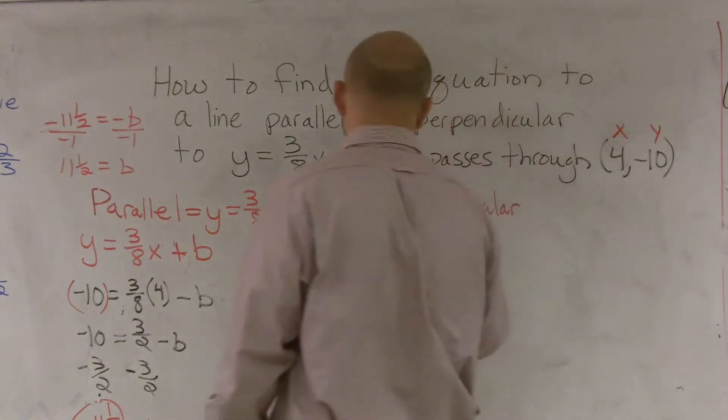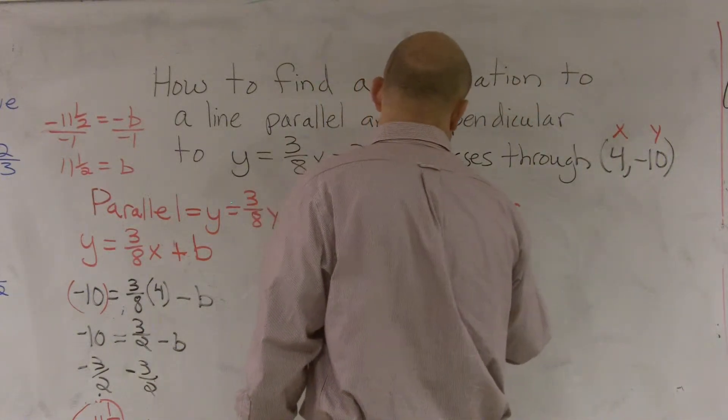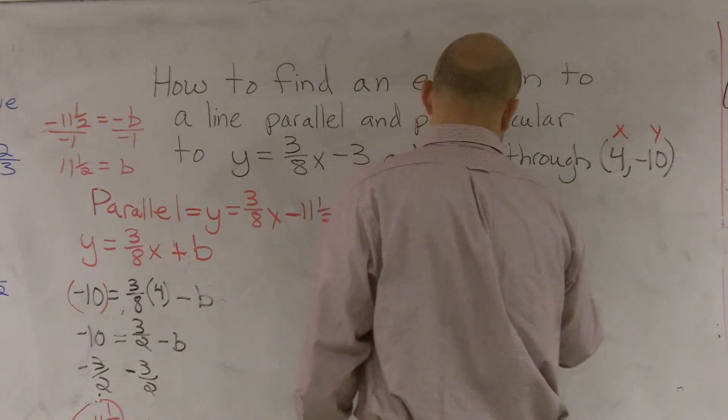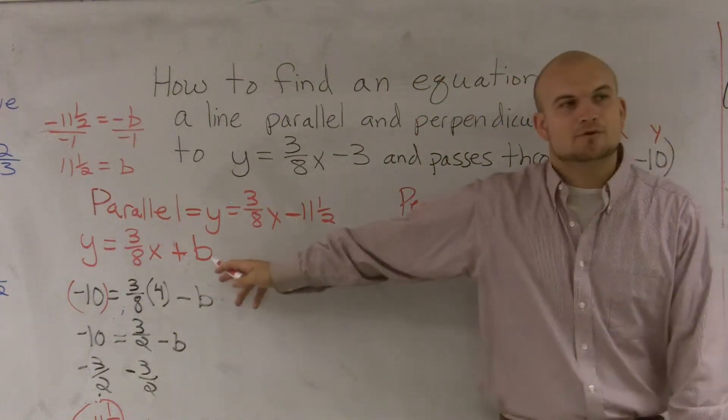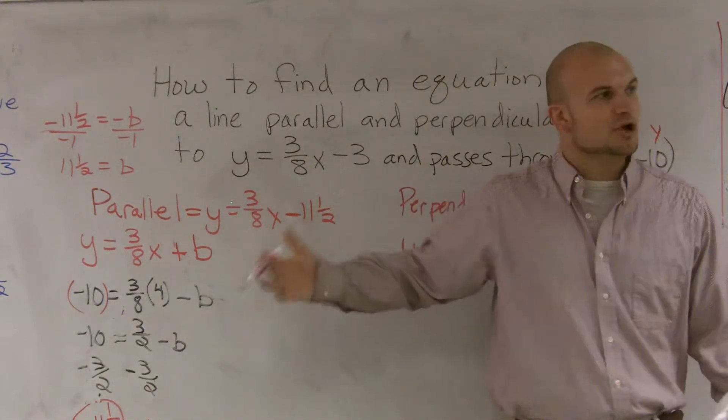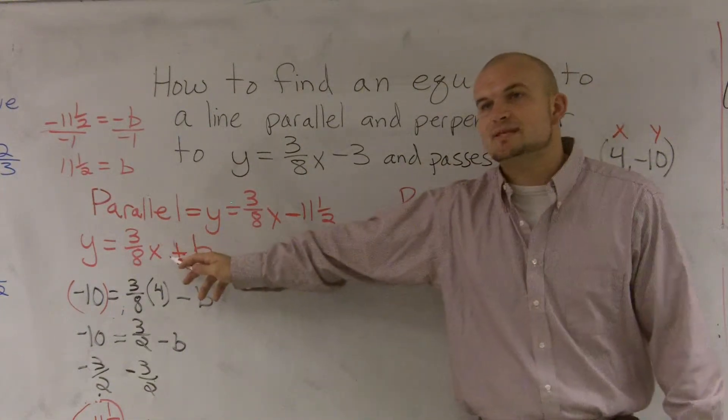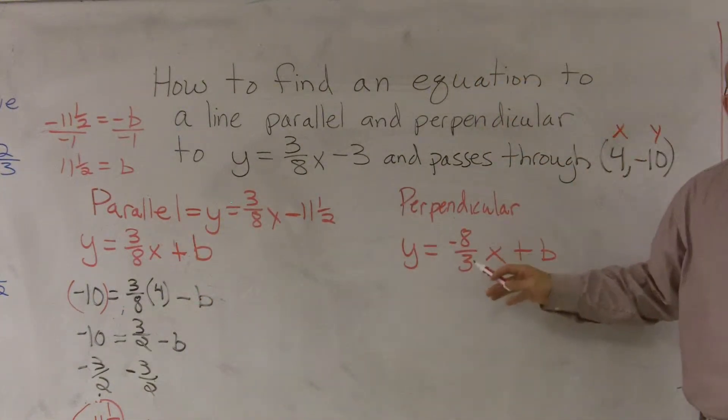So I rewrite my slope as y equals negative 8/3x plus b. So it's just like I did for parallel. The only difference is the slope is different. Here the slope has to be the same. Here the slope has to be a negative or opposite reciprocal.